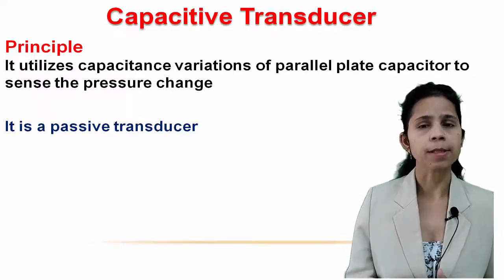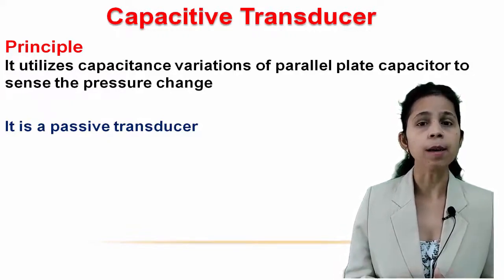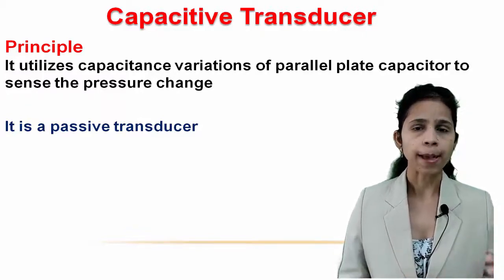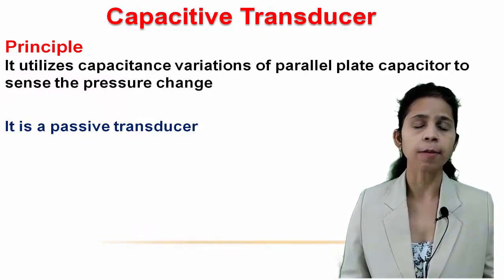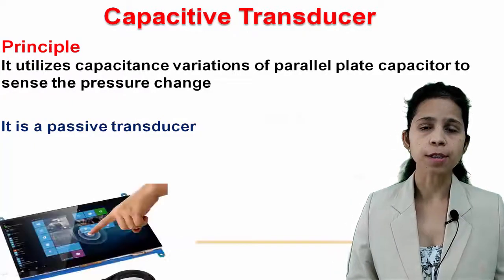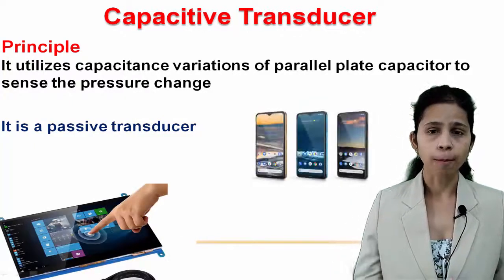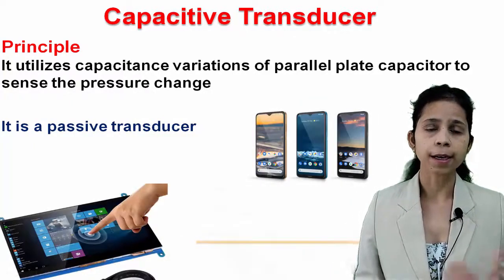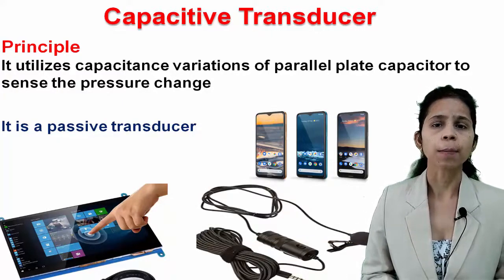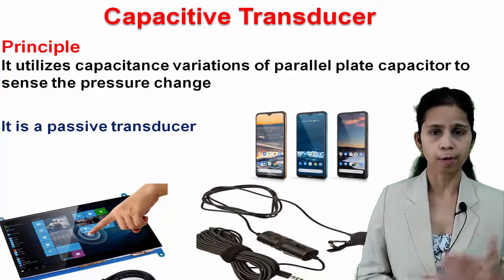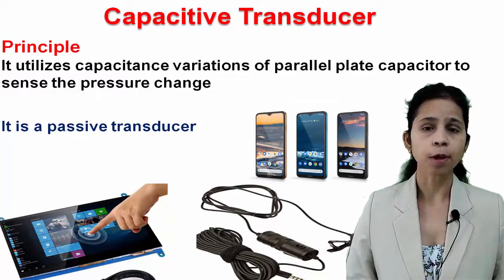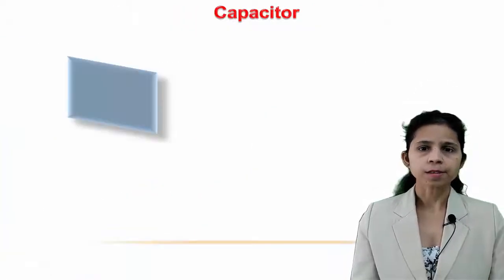This is done by connecting the capacitive transducer in a bridge or oscillator circuit. That is why it is a passive transducer, as it requires an external source of energy. Capacitive transducers are used in displays, mobile displays, condenser microphones, liquid level sensors, and humidity sensors.